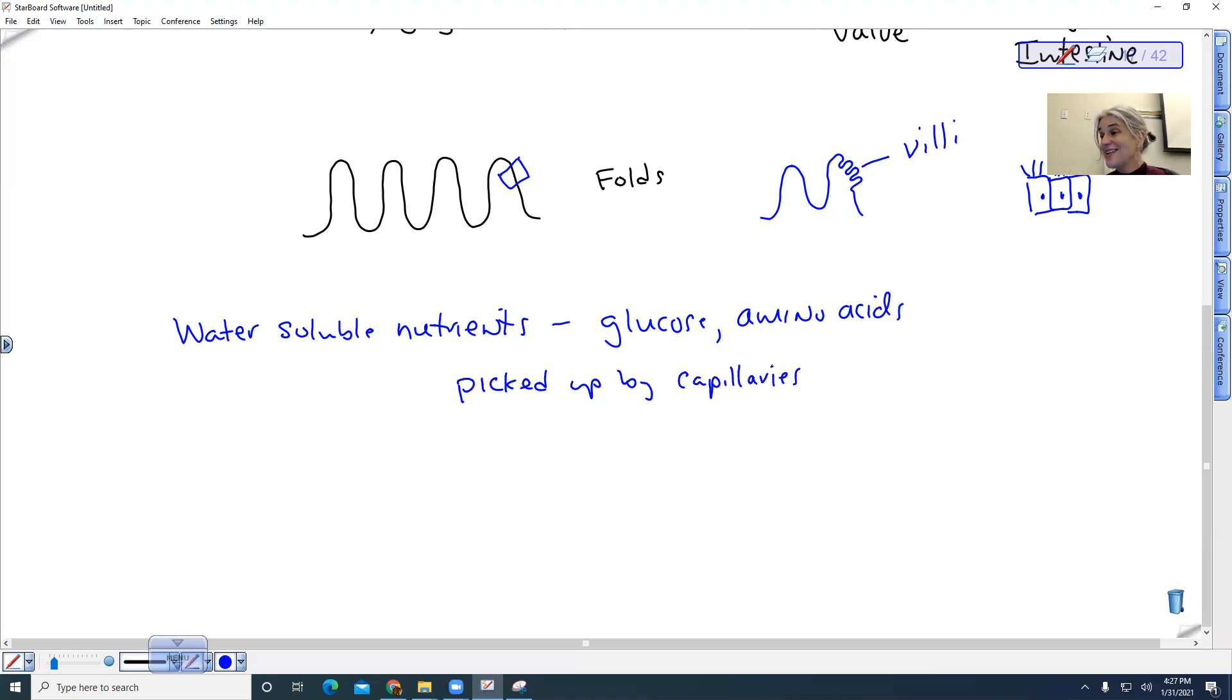They are then, the capillaries coalesce into larger blood vessels, and they're transported to the liver. So the nutrient-rich blood from your intestine, the nutrient-rich blood is transported to the liver.